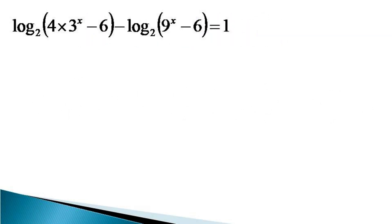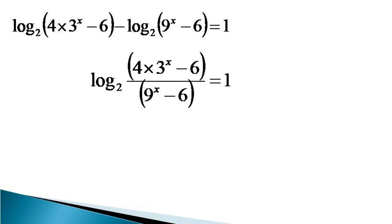To solve this equation, first on the left hand side we observe that two logarithmic terms are subtracting from each other. So here we use the division formula of the log, and the left hand side becomes log base 2 of 4 times 3 raised to the power x minus 6, divided by 9 raised to the power x minus 6, equal to 1.